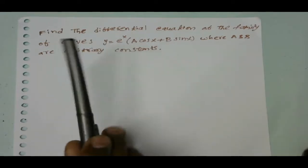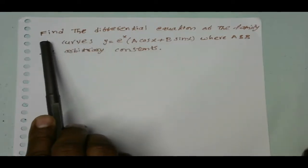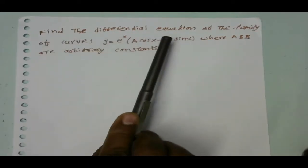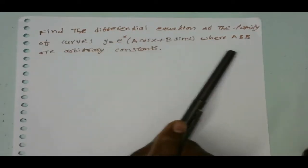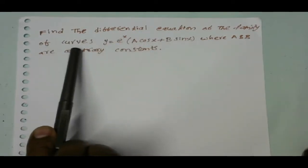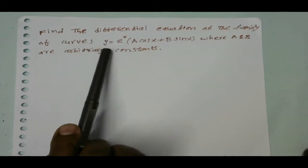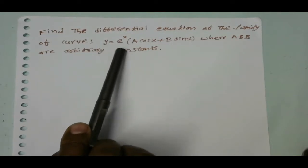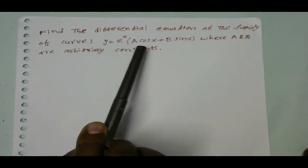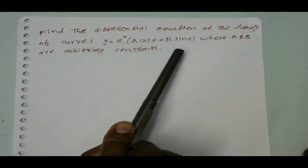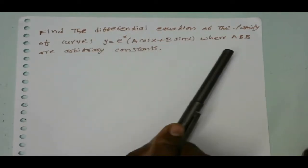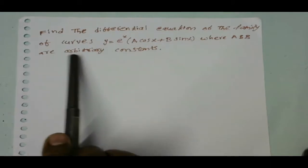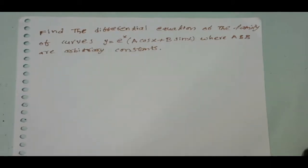Here you have one problem: Find the differential equation of the family of curves y equal to e power x into a cos x plus b sin x, where a and b are arbitrary constants.